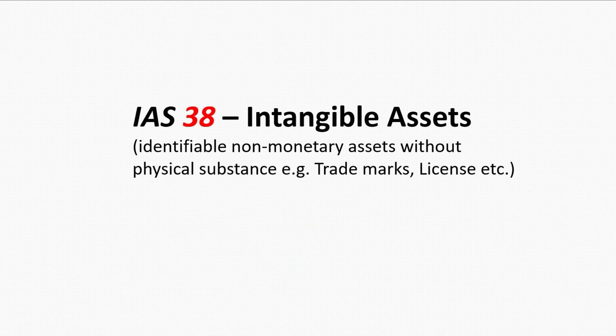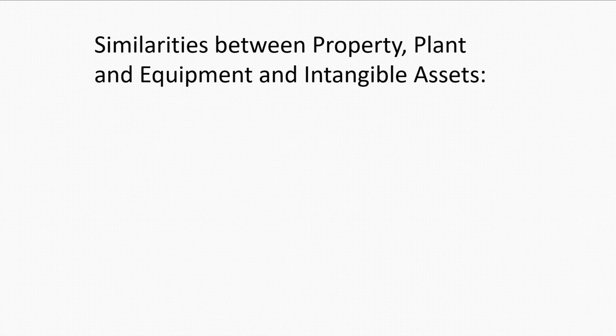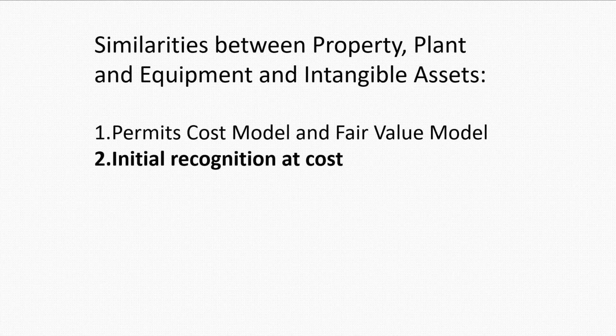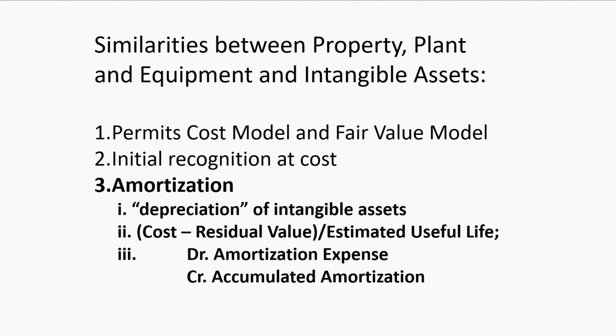Apart from tangible assets, we should also look at the accounting treatment for intangible assets — non-monetary assets without physical substance, such as trademarks or licenses. The accounting standards for intangible assets are quite similar to those for tangible assets: they also permit the cost model and fair value model with initial recognition at cost. There is also amortization, which is the equivalent of depreciation for intangible assets, and its estimation and double entries are also very similar.